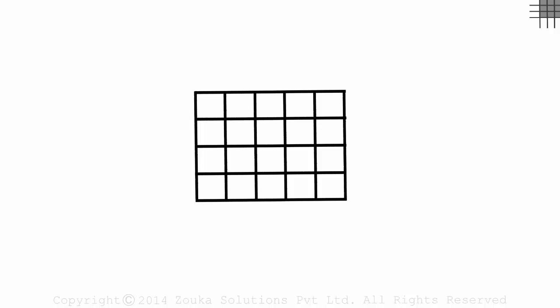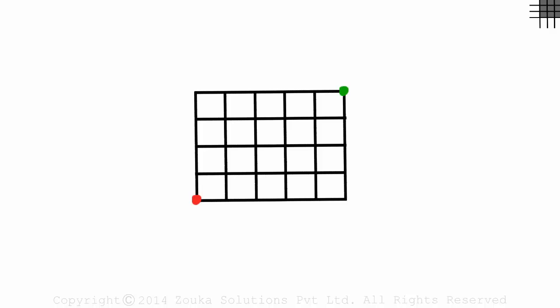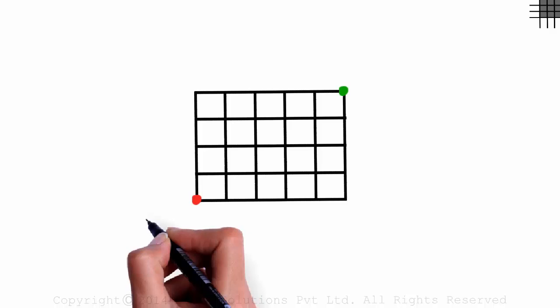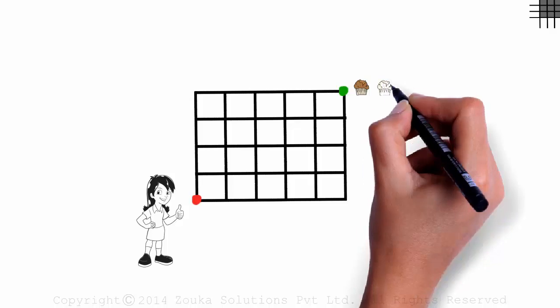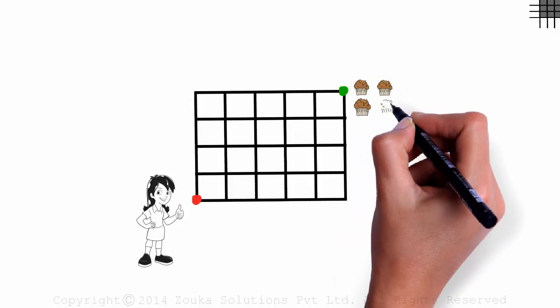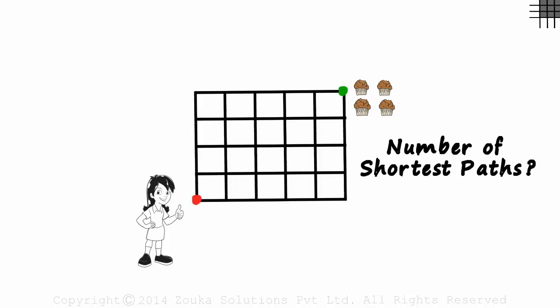We have been given this rectangular grid of paths, with this being the starting point and this being the destination. Zara is at the starting point and wants to reach the cake shop at the destination. Think of these lines as paths Zara can take to travel to the cake shop. With this, we have been asked for the number of different shortest paths Zara can take to reach the cake shop.